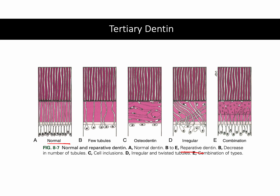When dentine responds to a stimulus, the number of odontoblasts decreases — they die because of the stimulus. If caries were fast and harsh, sometimes the odontoblasts get trapped inside the new tertiary dentine, resulting in cell inclusions. Sometimes the odontoblasts retract their processes and leave the tertiary dentine with only a collagen matrix. Tertiary dentine will look different in different histological slides depending on how odontoblasts reacted and how fast the stimulus was.